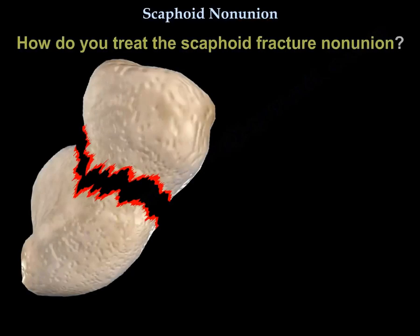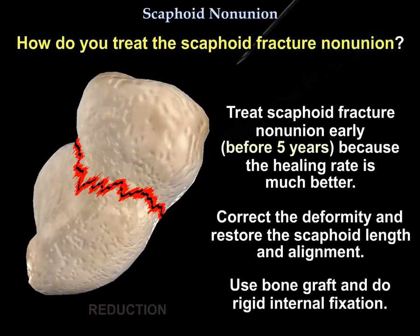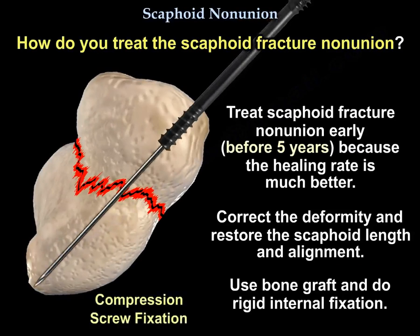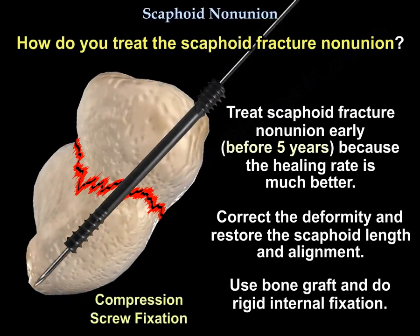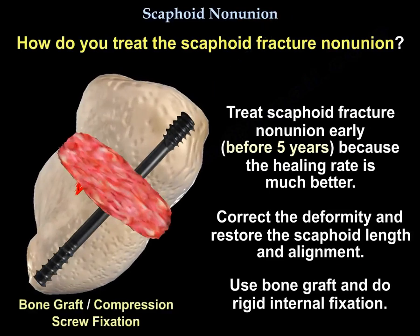How do you treat the non-union? You want to treat it early, before 5 years, as the healing rate is much better. You want to correct the deformity and restore the scaphoid length and alignment. Bone graft and rigid internal fixation will be used.